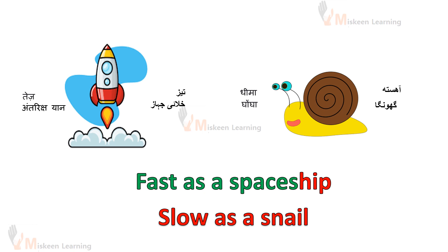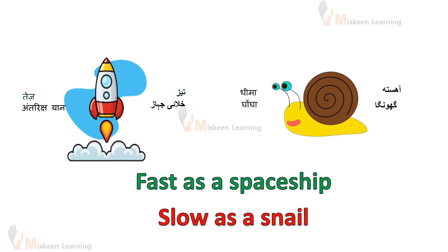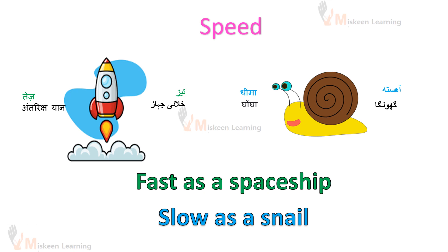Fast as a spaceship — spaceship ki tira bhoat tez. Slow as a snail — snail ki tira bhoat dhime dhime, ahista. Yahaan per hum koonse chiz ki comparison kerrehe hai? Koonse common feature ki? Speed ki — we are comparing speed here.